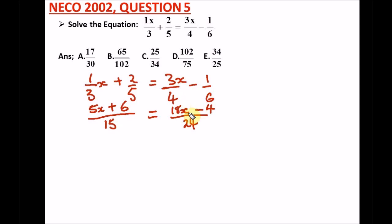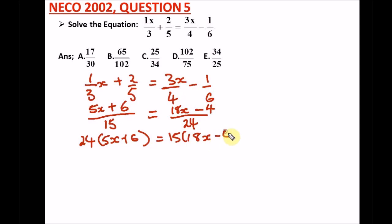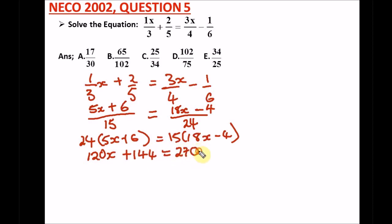What we have is 5x plus six over fifteen on the left, and 18x minus four over twenty-four on the right. We cross multiply: 24 bracket 5x plus six equals 15 bracket 18x minus four. Opening the brackets: 24 times 5x gives 120x, plus 24 times six gives 144. On the right: 15 times 18x gives 270x, and 15 times minus four gives minus 60.